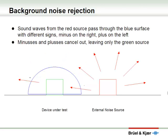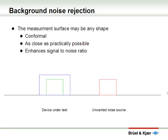Next, we'll have a look at the external noise source. The external noise source is radiating sound waves of its own — those are the red arrows. They will pass into the blue measurement surface with different signs depending on which side. As the sound waves enter the blue hemisphere, they have a minus sign, and as they leave, they have a plus sign. So integrating over the blue surface, the minuses and the pluses will cancel out, and the influence of the external noise source is cancelled. When determining the sound power of the green box, the blue measurement surface may be of any shape that's convenient. For practical measurements, it's often best to have the blue box as close to the green source as possible. This will enhance the ratio of the sound you're measuring to the background noise and keep your measurements clean.